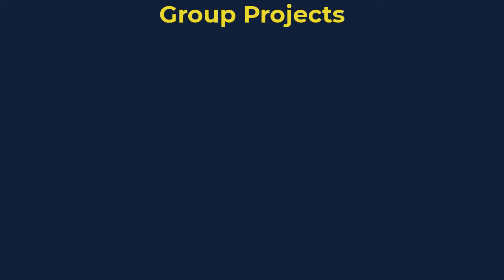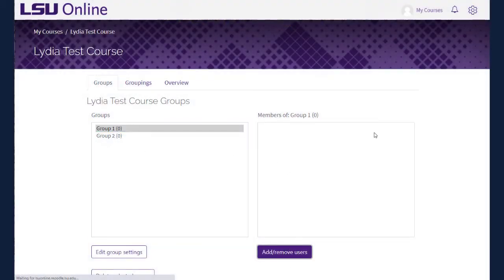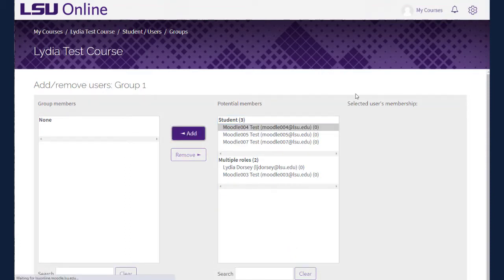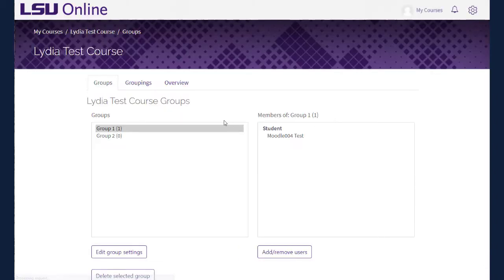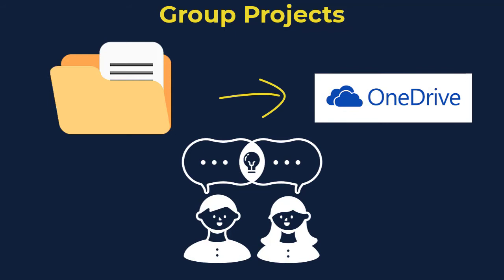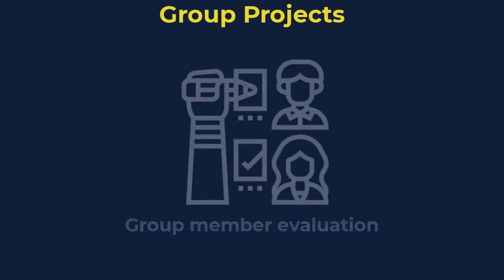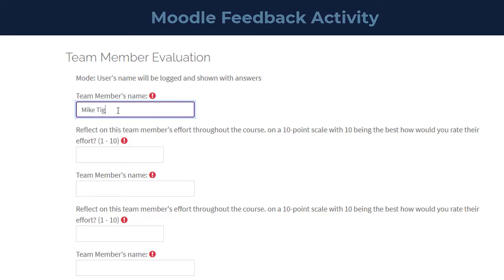One of the best ways to promote collaborative learning at the highest levels of critical thinking, evaluation, and creation is by assigning a group project in which students work together to produce a paper, presentation, or other final output with checkpoints throughout the semester. Moodle provides various tools to facilitate group work. You will need to set up groups and groupings in Moodle so students can interact in group-specific forums and submit assignments as a group, with one student submitting for the group while you assign a grade to all members. For easy file sharing, it is recommended that students create a shared folder in OneDrive. You may also want to create a group evaluation survey using the Moodle feedback activity so students can provide feedback on fellow group members.